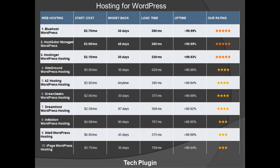Here you see all the hosting options with their starting costs, money-back guarantee, load time, uptime, and ratings. I personally use Bluehost for WordPress — it's simple to make changes, easy to get a domain, and they notify you about expiry dates and any errors on your site. The first option, Bluehost, has a starting cost of $2.75 per month, a 30-day money-back guarantee, 390ms load time, 99.99% uptime, and a 5-star rating.